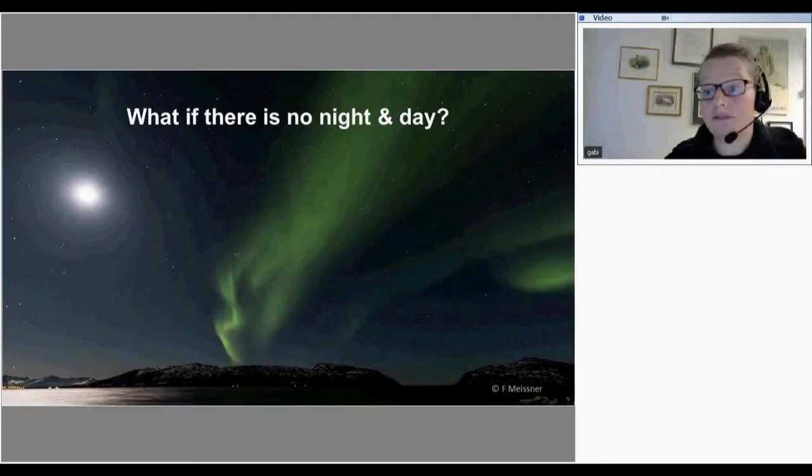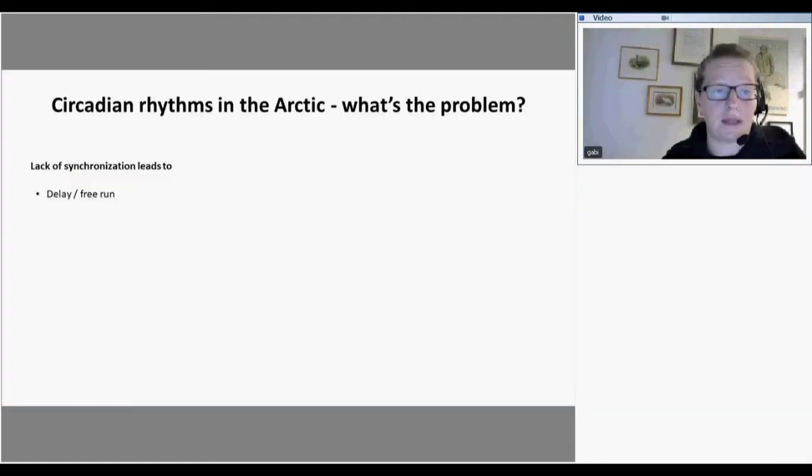But what if there is no day and night, as we have in the Arctic, when you just have six months of daylight and six months of night? How does the biological clock cope with that? Mostly it means there is no synchronization. The body clock might still be working, but it doesn't get synchronized by the onset of light in the morning or disappearance of the sun in the evening. This lack of synchronization can do several things.